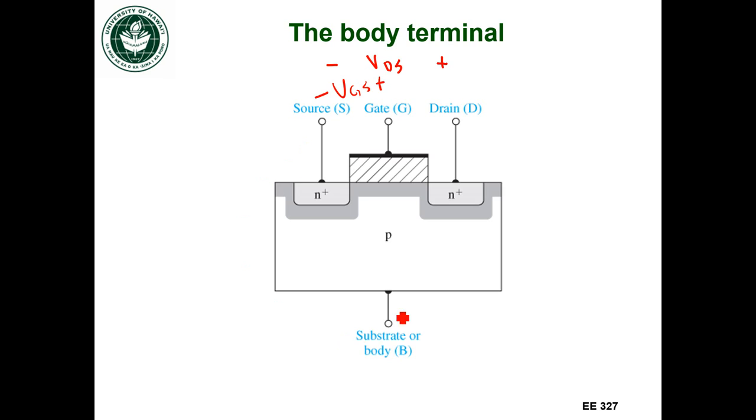We just said, okay, we're going to connect the body terminal or the contact to the substrate. We're going to connect that to the source, and that's it. But we don't have to connect it to the source. We can actually apply some bias between the source and the body terminal or the substrate, and that is the substrate bias.